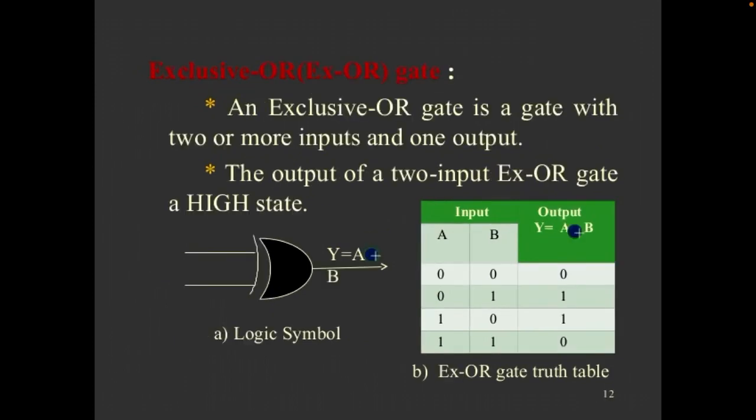Exclusive XOR gate: XOR gate is a gate with two or more inputs and one output. The output of two input XOR gate is high state. The value is: either one value is true, the value is true. Otherwise two values are true, the value is false. Two values are false, the value is false.